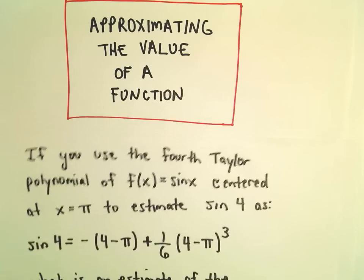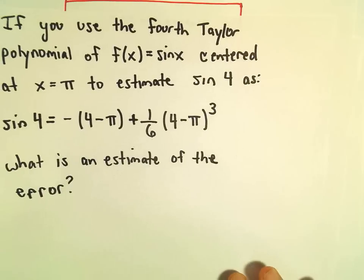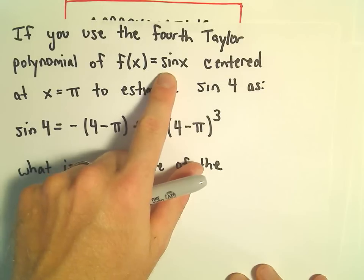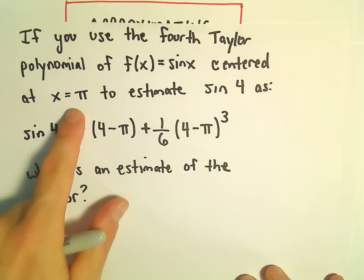Alright, so in this case we've got a fourth Taylor polynomial for the function sine x, and this is going to be centered at x equals pi.